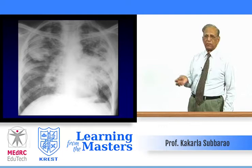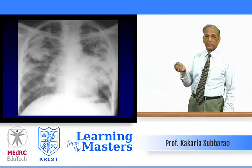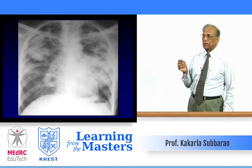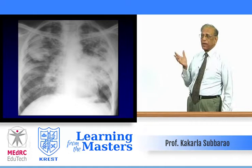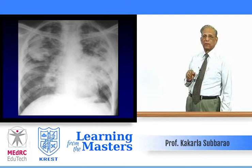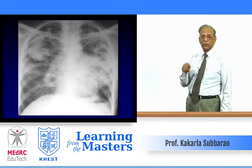The heart is normal. About the hilum — they are just big. The hilum may be big because of nodes, because of dilated vessels, or because something else is there — a mass in the hilum. There is no bone erosion, no soft tissue changes. Looking at the right upper lobe, there is a homogenous opacity whose outer border is parallel with the thoracic cage — that is a significant finding.